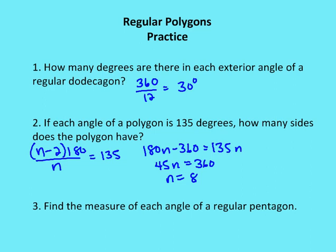Find the measure of each angle of a regular pentagon. A pentagon has five sides, and the measure of each interior angle in a regular polygon is (N minus 2) times 180 over N. So we have (5 minus 2) times 180 over 5, or 540 divided by 5, which equals 108 degrees.